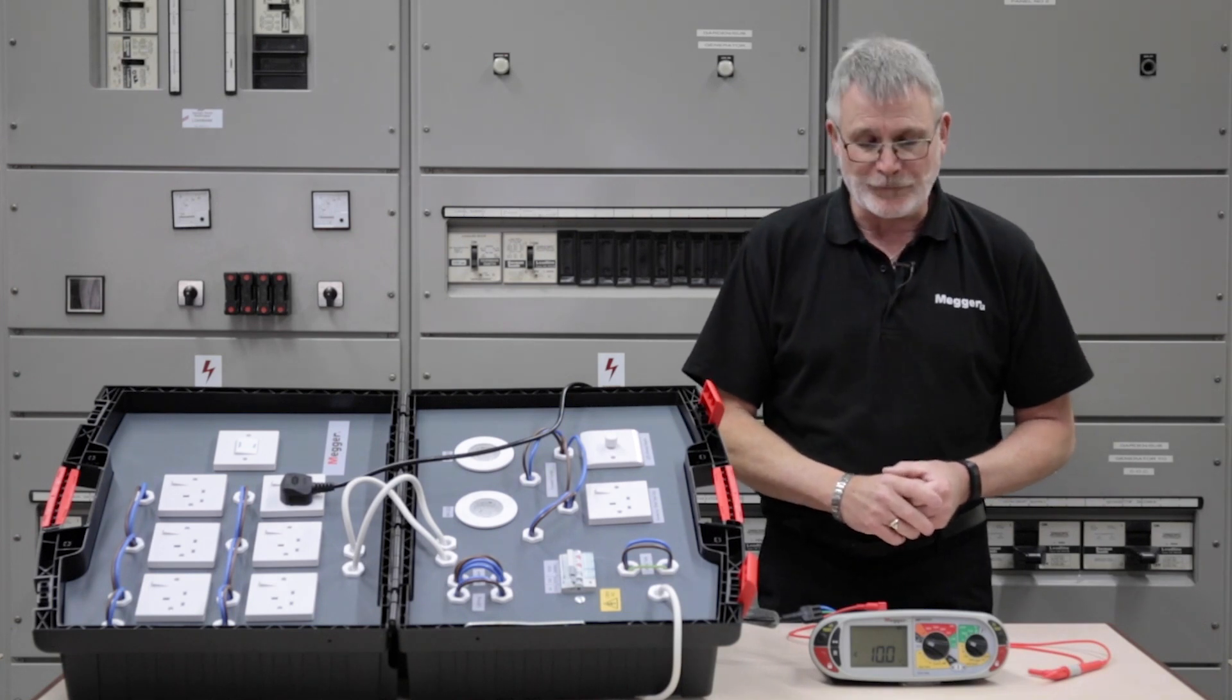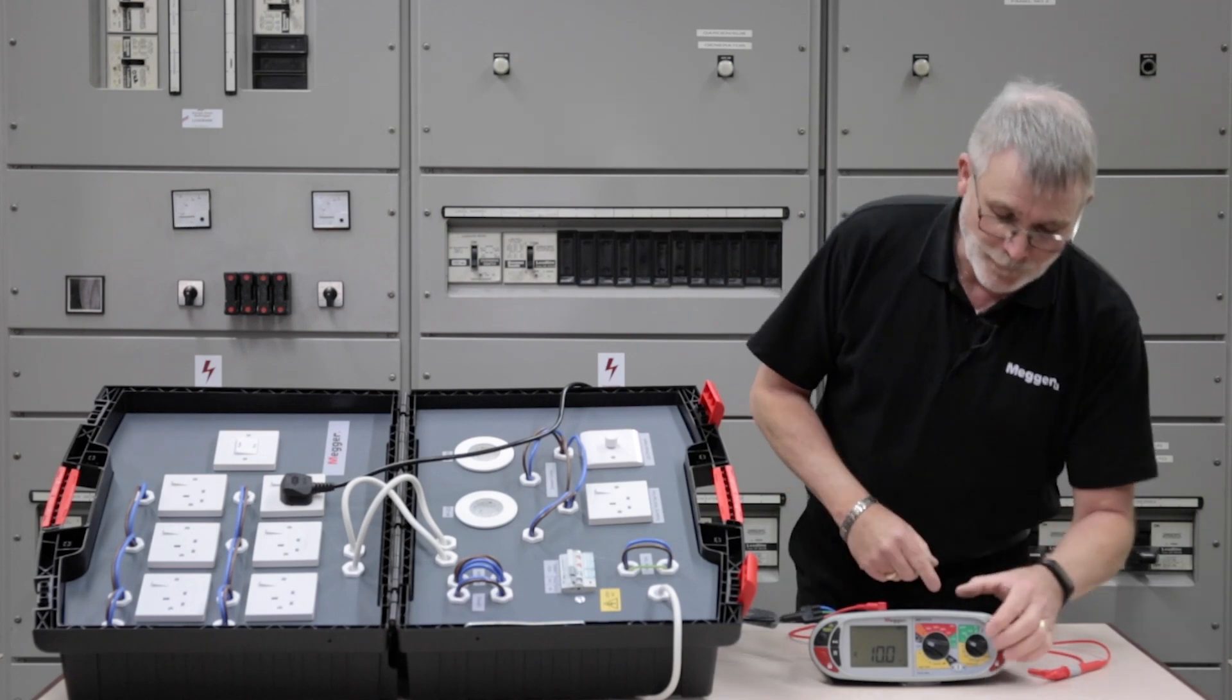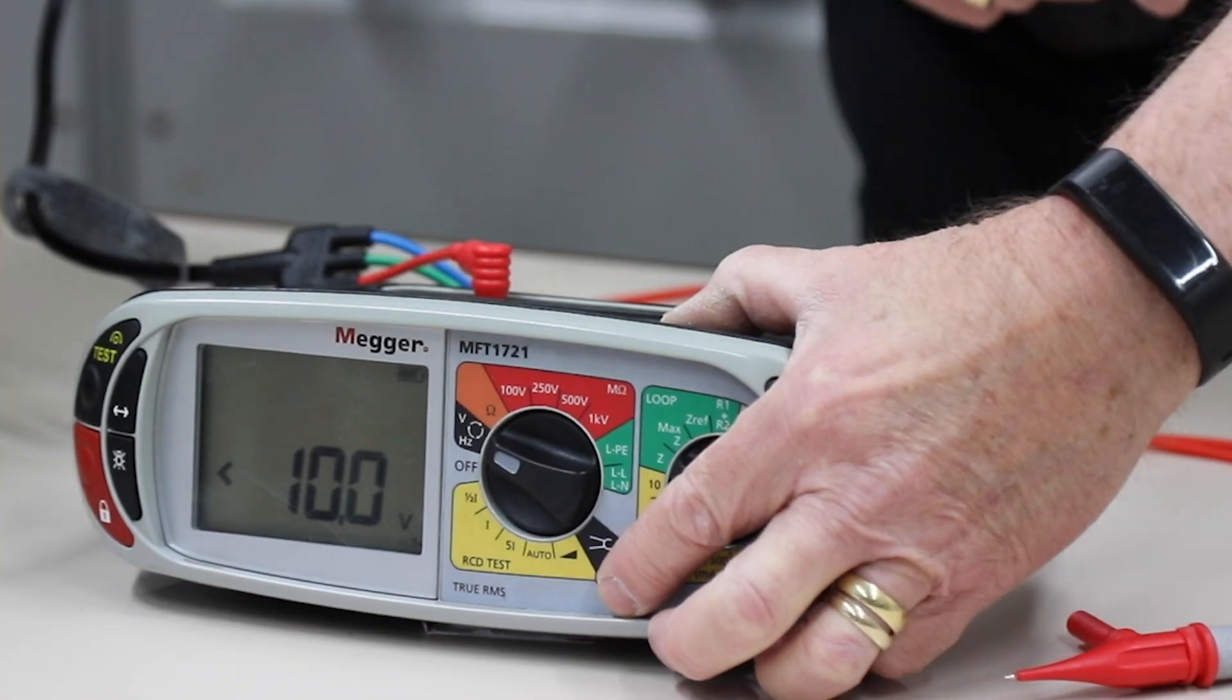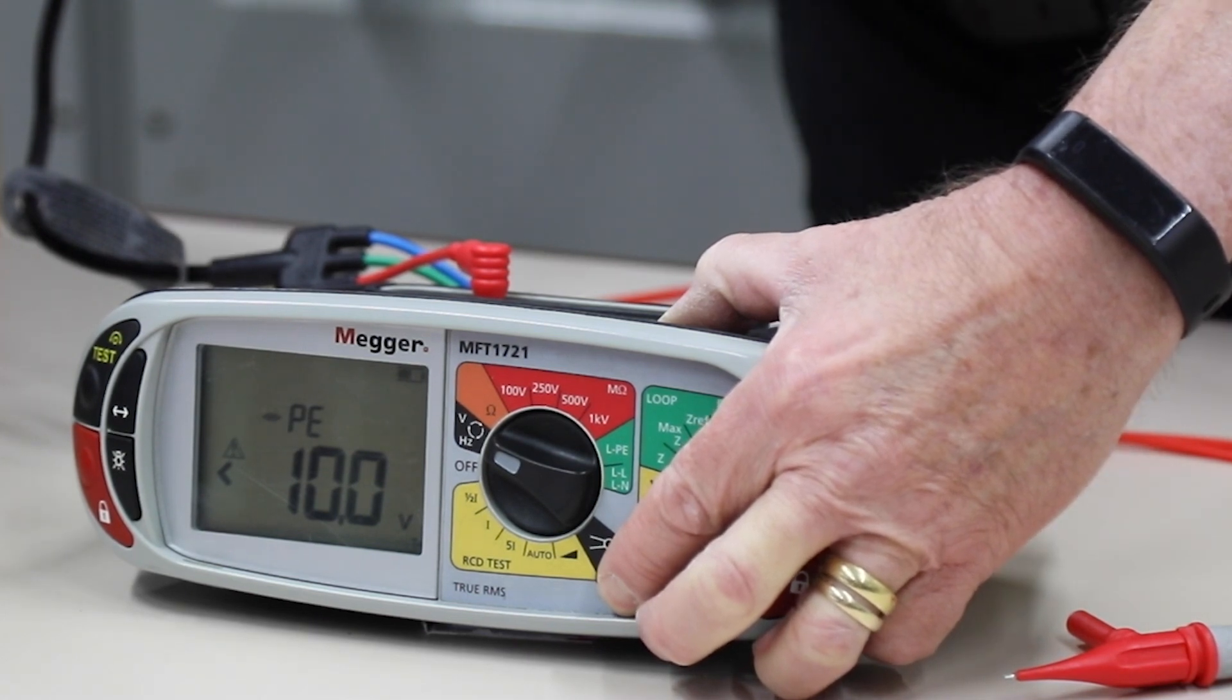If you suspect that there is voltage on a piece of metal or metalwork around the building, simply put your probe onto that piece of metal, put your finger on this button and if there is voltage there, it will bleep and show the symbol PE.